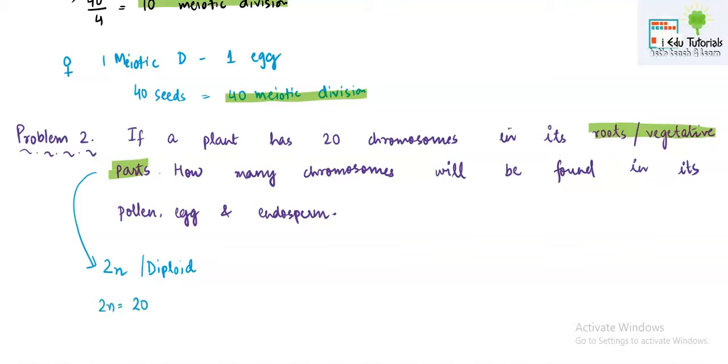Now it is very easy because you know that pollen and egg, they are the examples of gametes and gametes always contain half the number of chromosomes to that of the somatic cells. So simply take the value of 20 chromosomes at the top and divide it by 2 and your answer will be 10. That means 10 chromosomes will be there in the pollen, 10 chromosomes will be there in the egg. Now you know the value of N here. The value of N is 10.